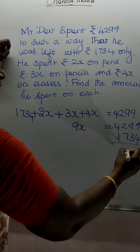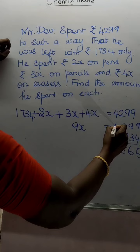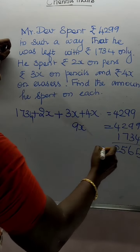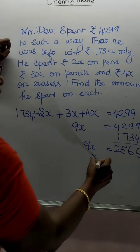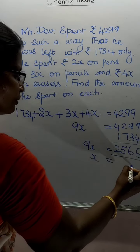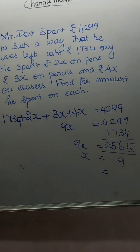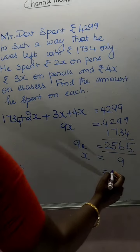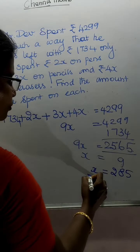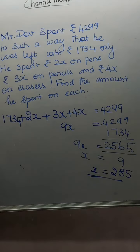What will be the answer? 2,565. That is equal to 9x. Therefore, x is equal to 2,565 by 9. Therefore, the answer is C here. x is equal to 285.